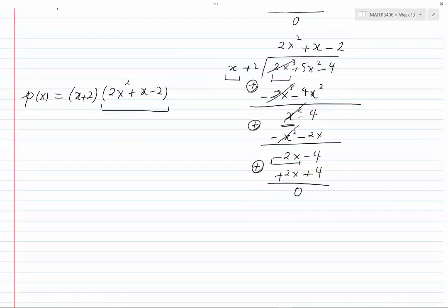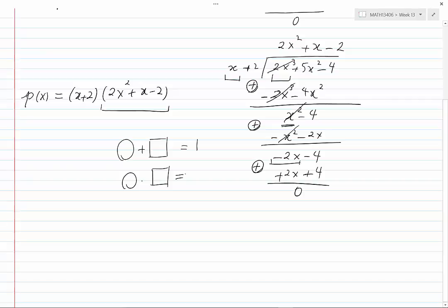If we can find two numbers that when added give 1, and when multiplied give 2 times minus 2, which is minus 4, we can then easily factor this expression. However, by trial and error, we can see that it is not easy to come up with these two numbers. The reason is that the roots in this case are not integers, which is why they are hard to figure out.